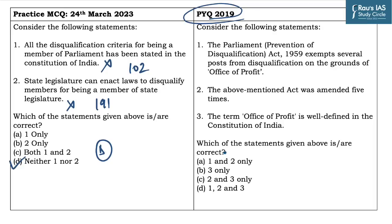Now moving on to the previous year question, it can be easily solved by elimination technique. The third statement says the office of profit is well defined in the Constitution of India. If you have read Indian Polity properly, you must be aware that the office of profit is not defined in the Constitution. The moment you eliminate option three, you will reach the correct answer, which is one and two only.